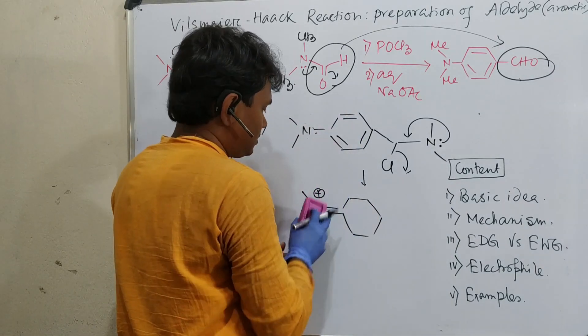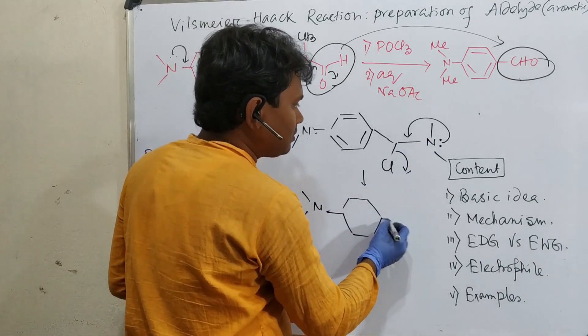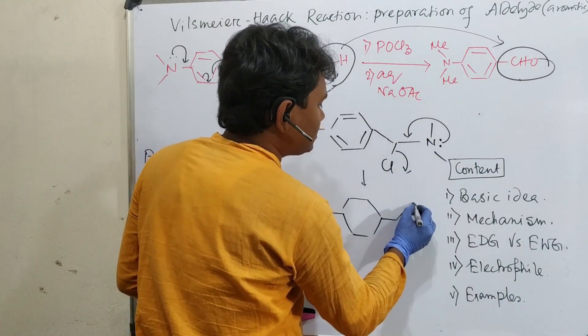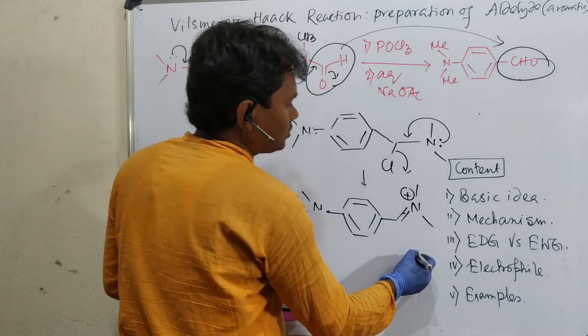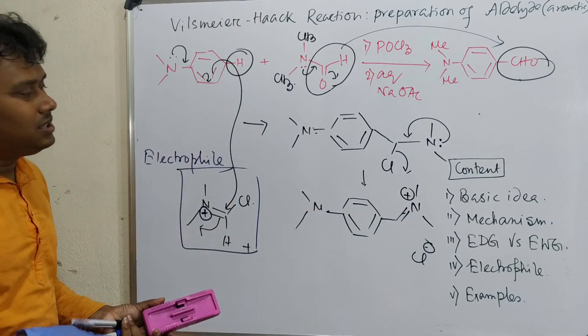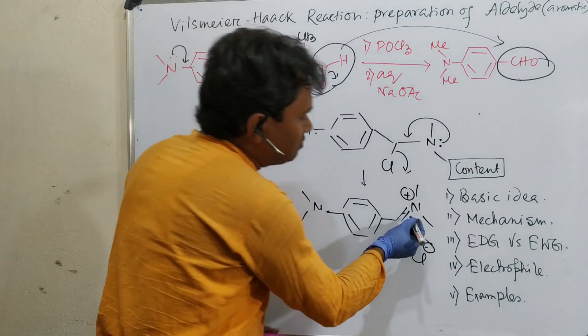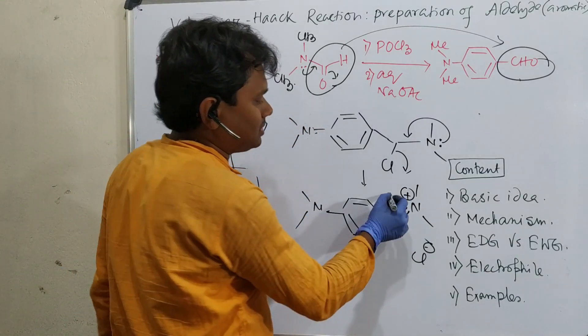In the next step, nitrogen pushes and Cl leaves, creating N with positive charge along with chloride. These are imine derivatives, protonated imine. Secondary amine plus aldehyde results from this.